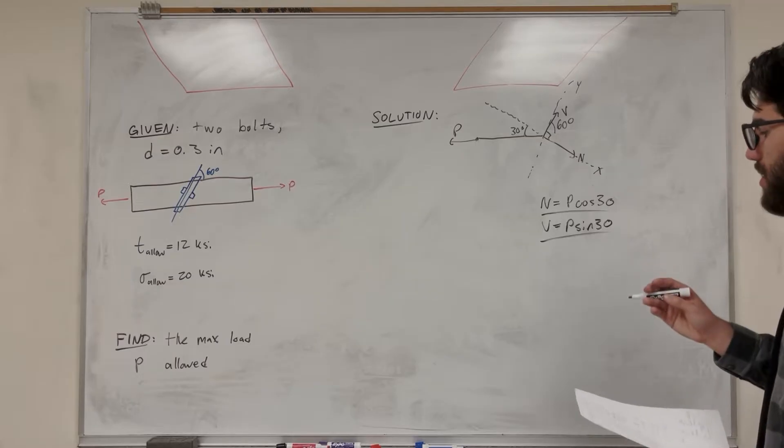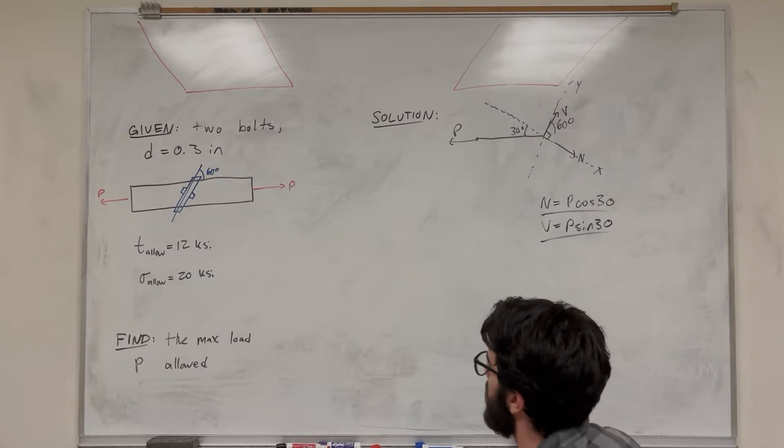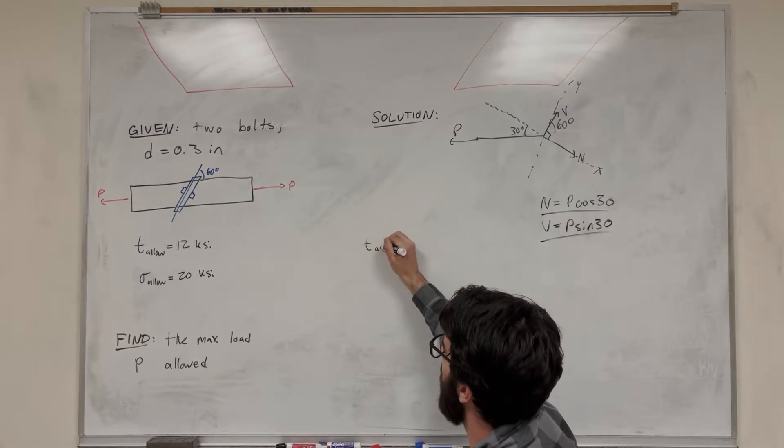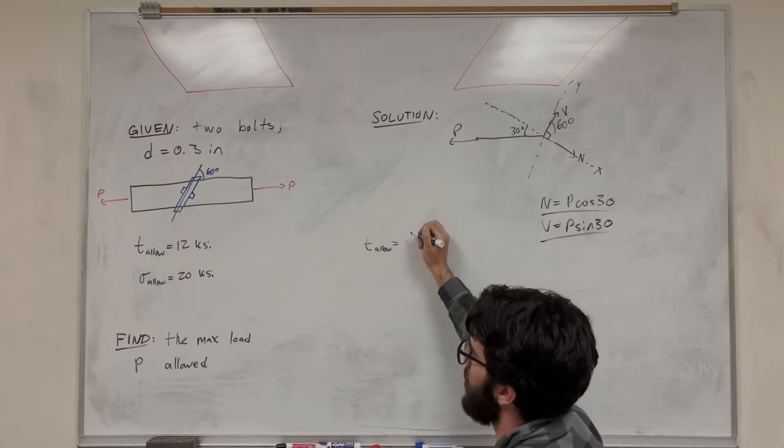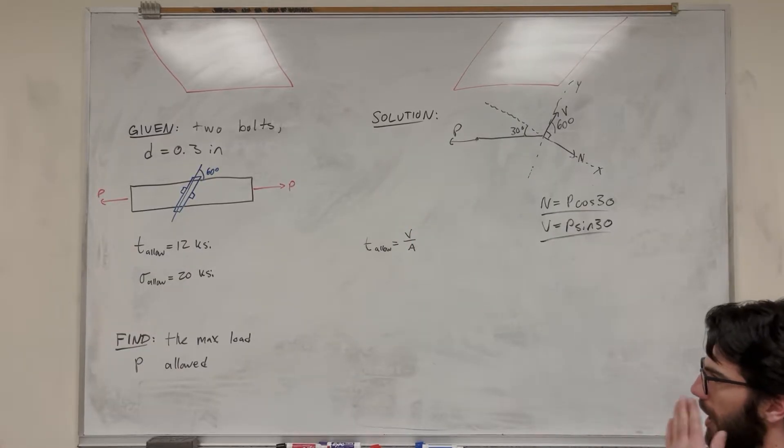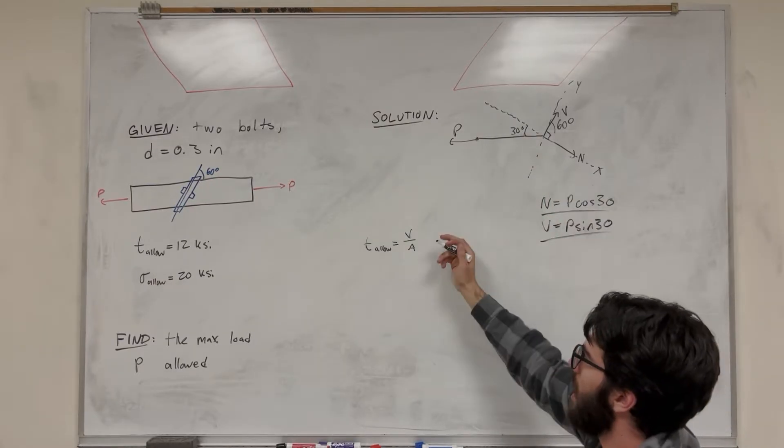So now we have this and now we need to go into our shear stress equations. So let's start with the shear. Tau allow, this is shear over area. That is the shear stress equation, it's the shear force V over the area of the bolt.